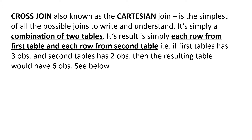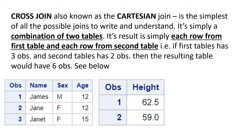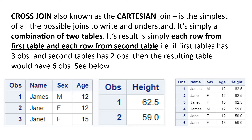Let's see an example. This table has three observations — James, Jane, and Janet — and here we have two observations which are height values. So what will happen if you join these two with a cross join? You would have this kind of result.